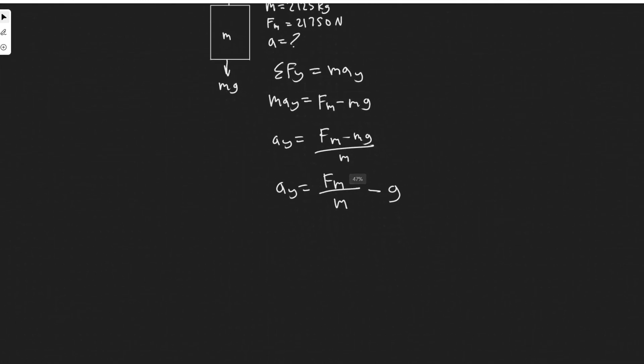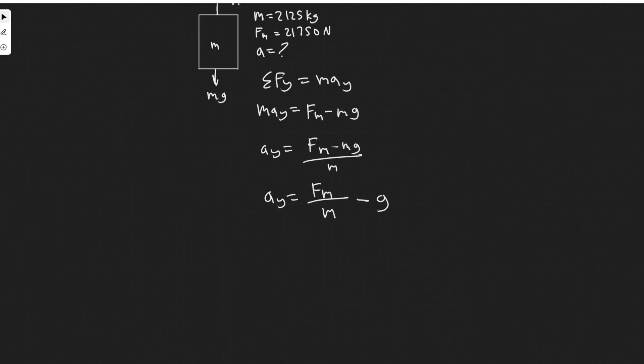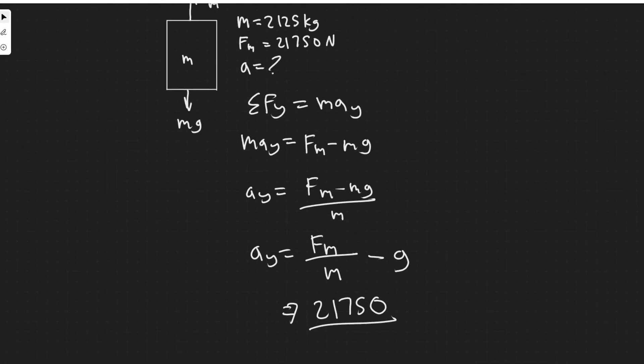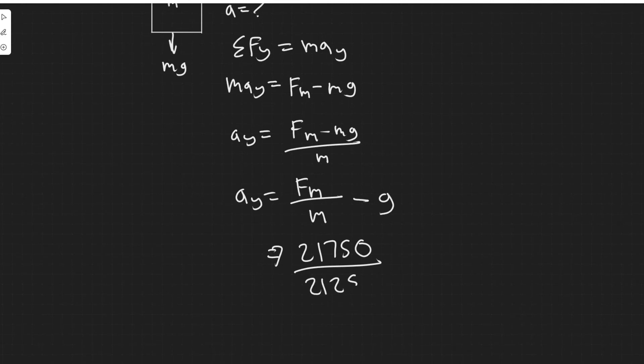So if we want to find the acceleration when we apply this force on the elevator, we just plug in this formula. Plugging it in, the maximum was 21,750 divided by its mass which is 2,125, and then minus g. So g is the acceleration due to gravity, a constant value of 9.8 meters per second squared.